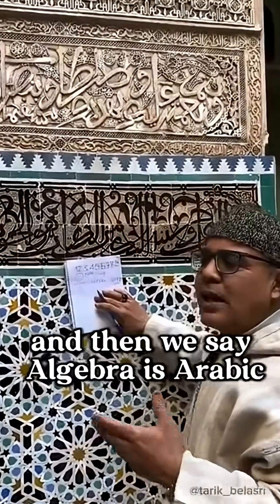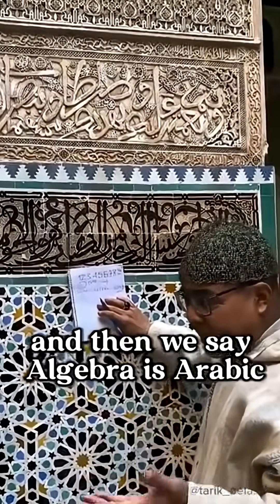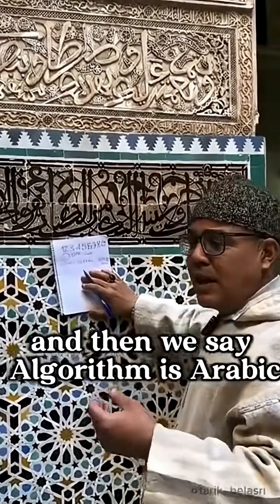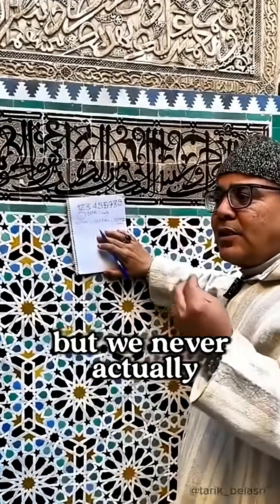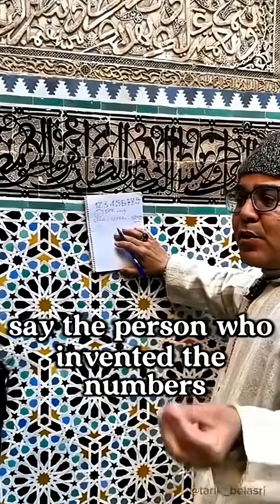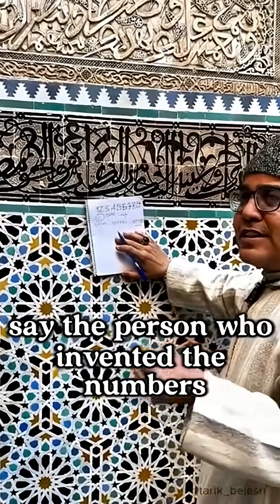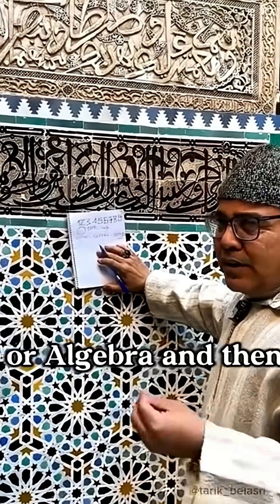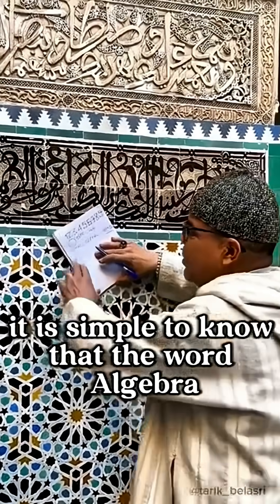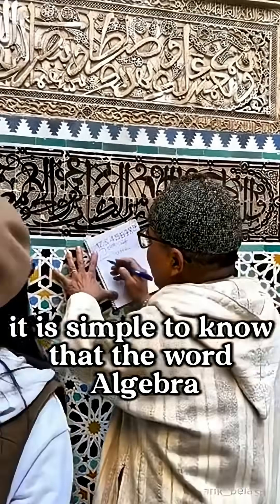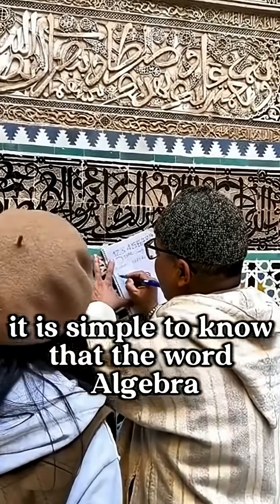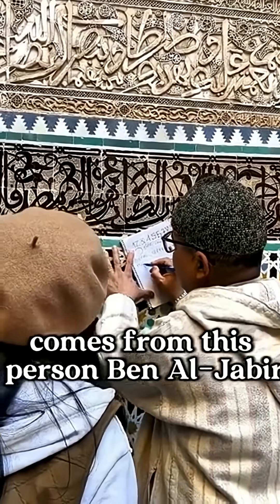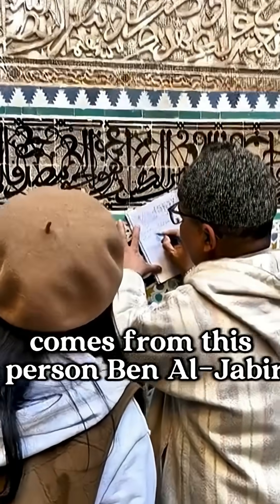We say the numbers are Arabic, algebra is Arabic, algorithm is Arabic — but we never actually name the person who invented the numbers or algebra. It is easy to see that the word 'algebra' comes from this person: Ben Al-Jaber.